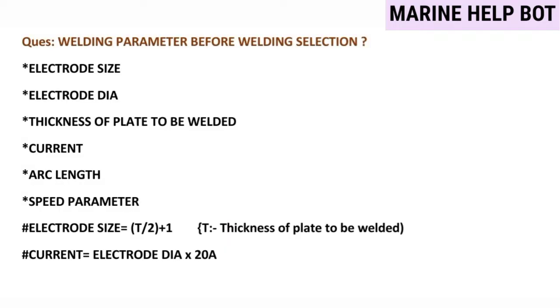Now that we know about the electrode, there are some welding parameters we should keep in mind before welding. These welding parameters — which were explained in the previous slide — should be known before selecting the welding setup.